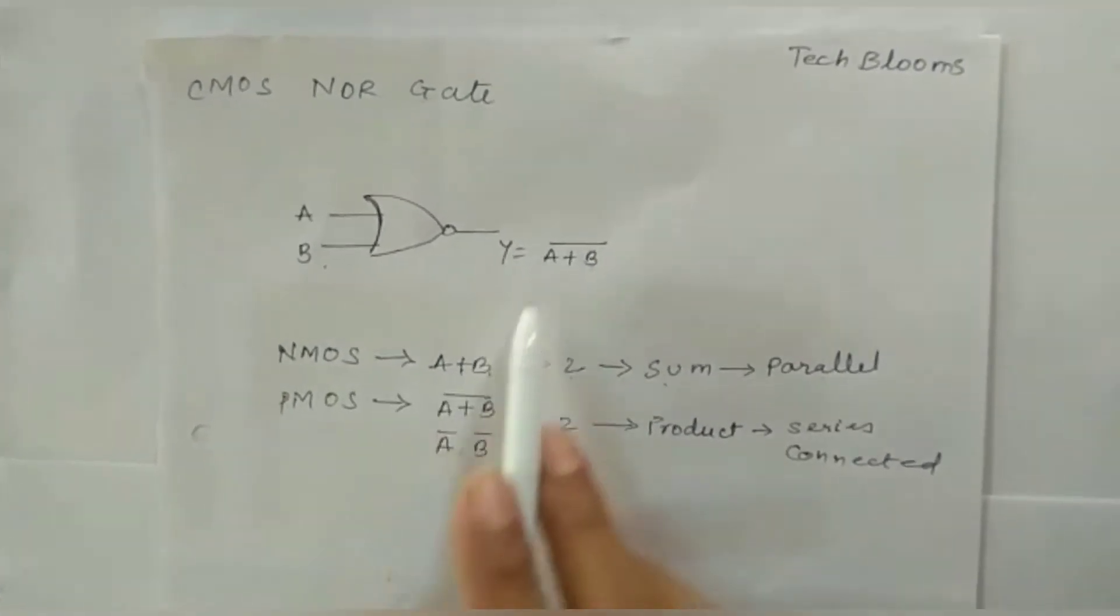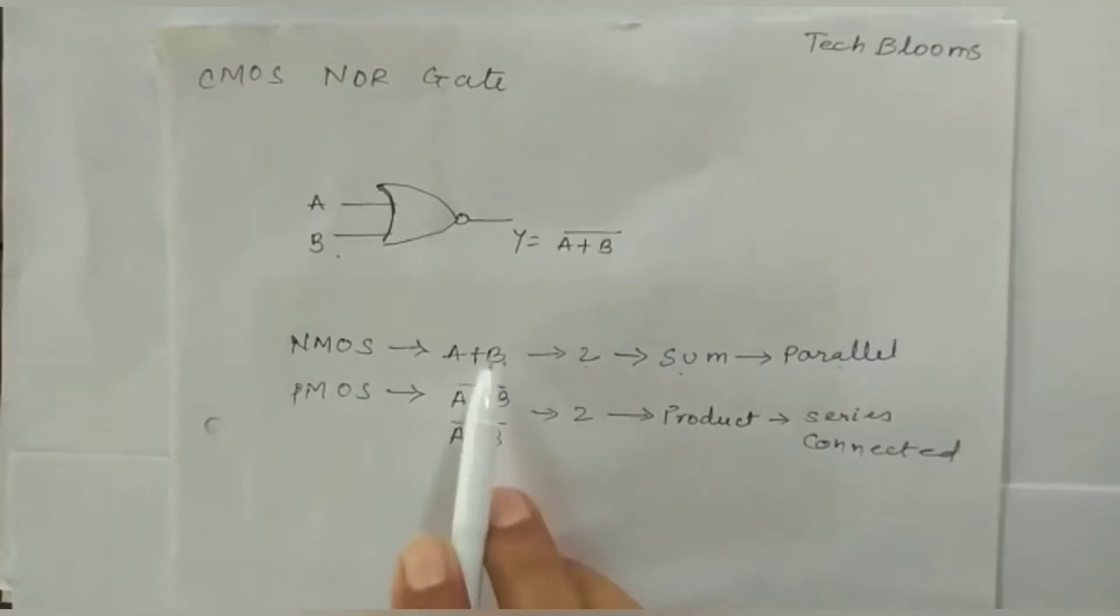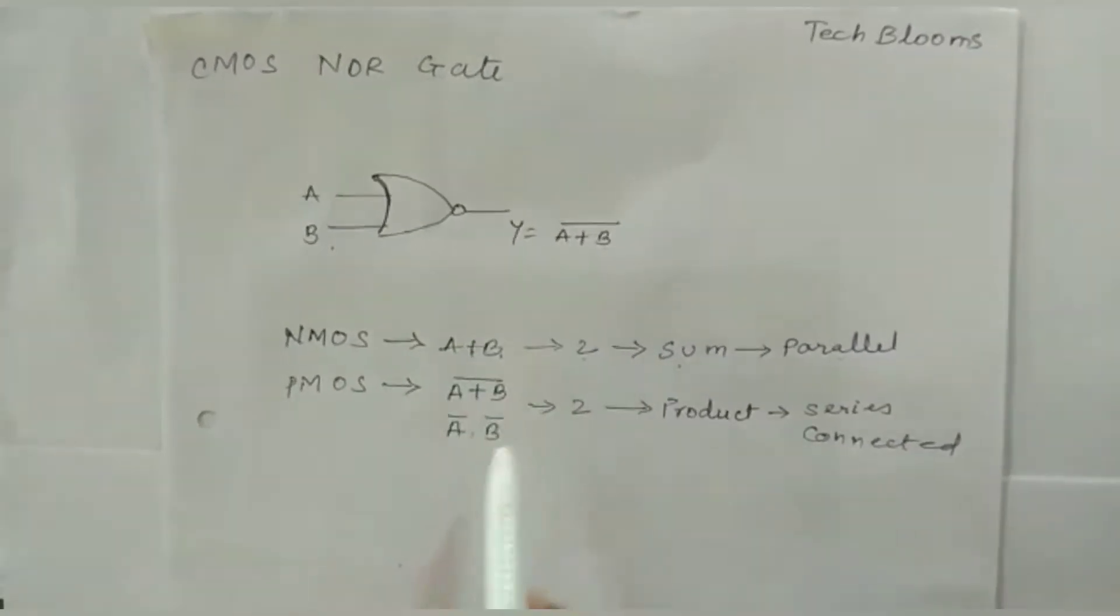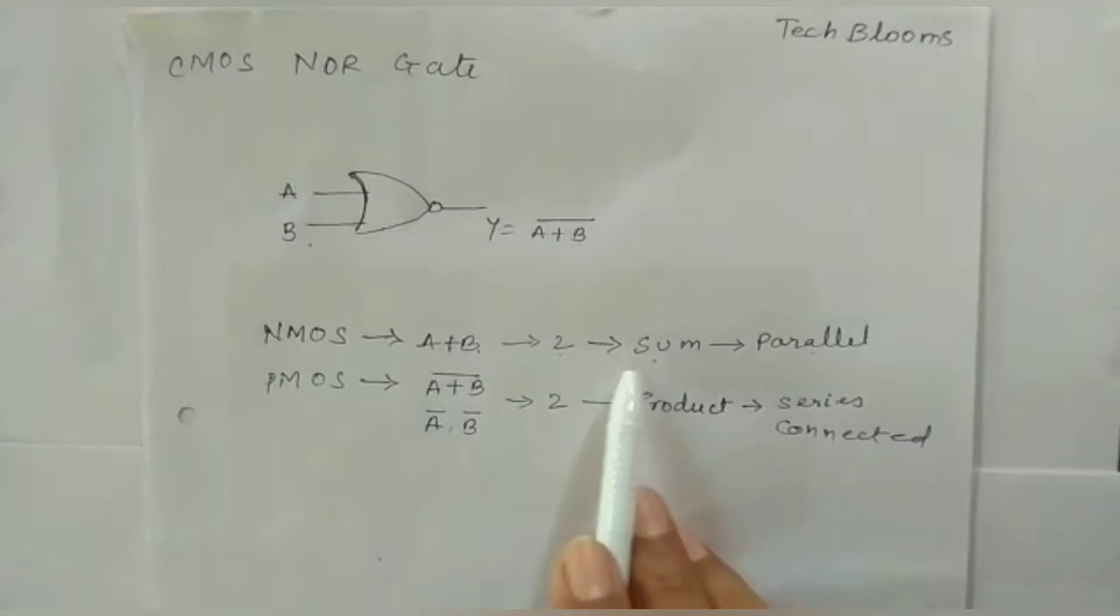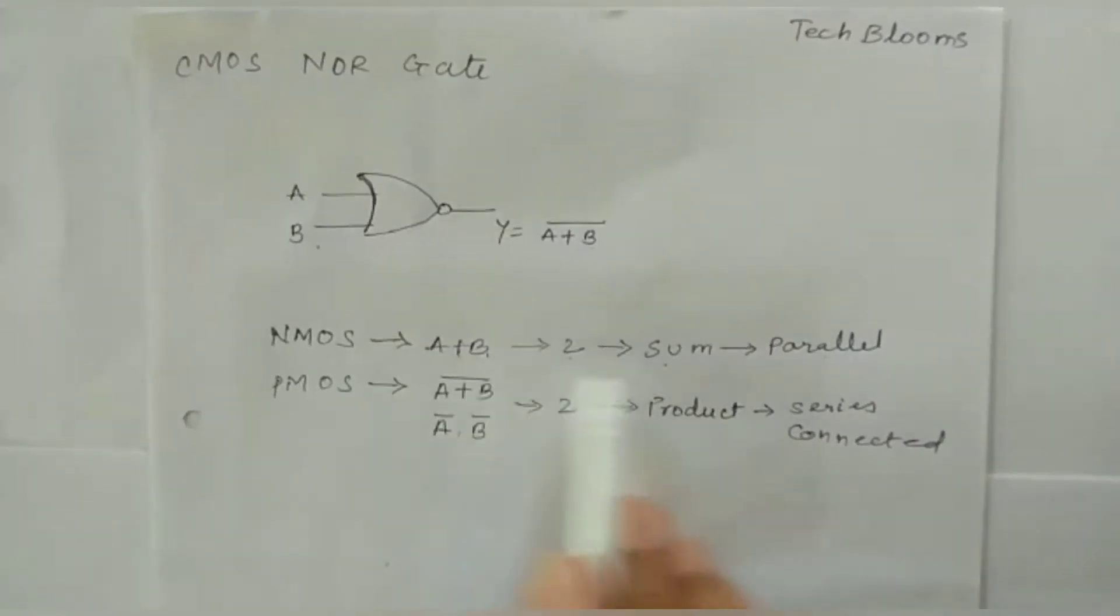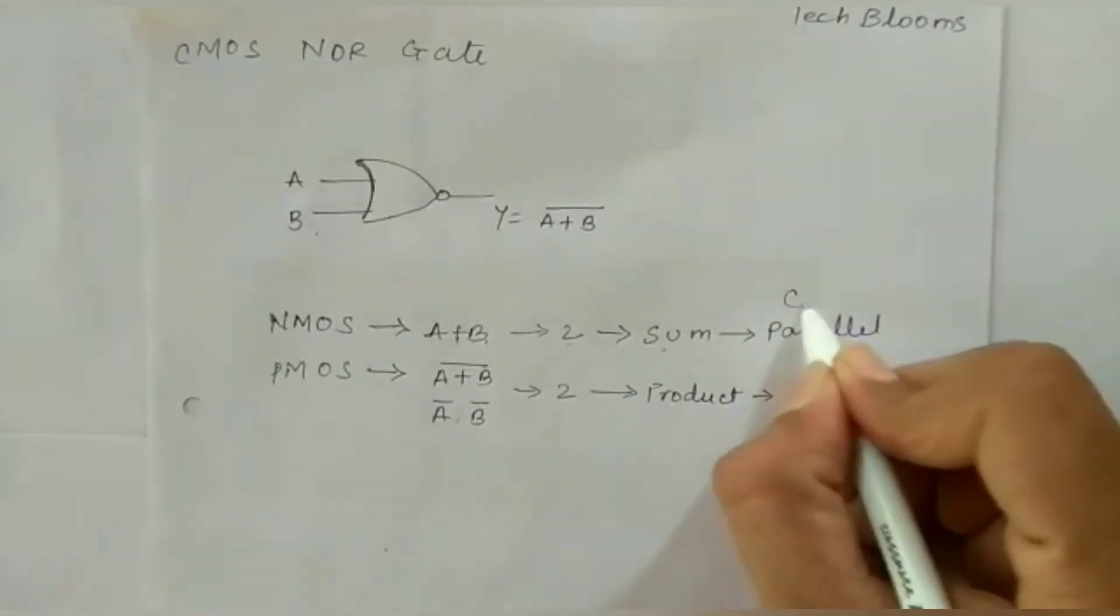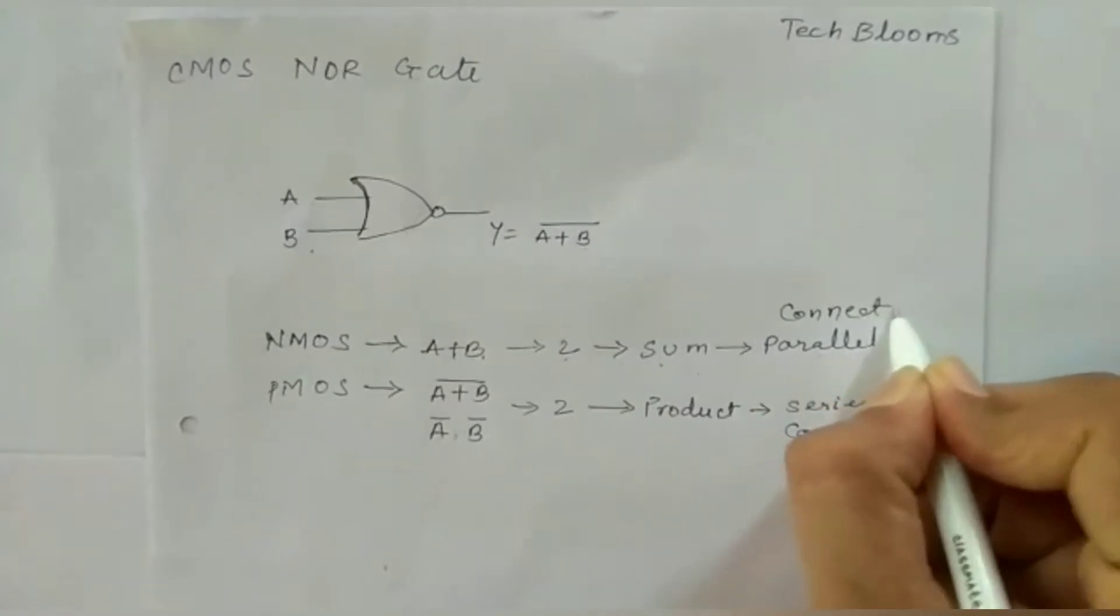For NMOS we will take directly the expression without taking the bar which has two variables A and B. The middle sign is sum, that is A plus, so it is connected in parallel.